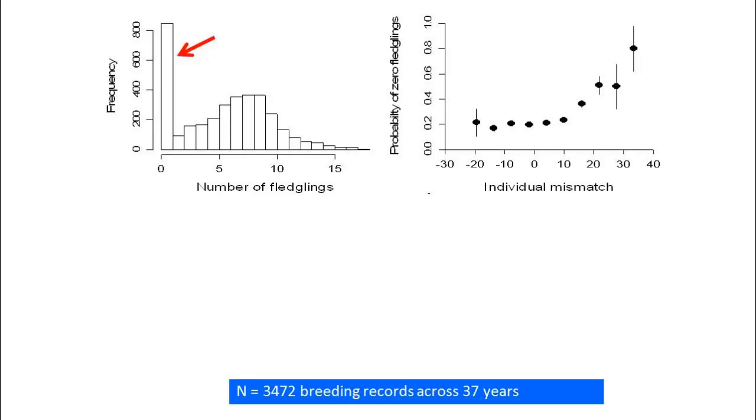We found that the probability of producing zero fledglings shows a strong quadratic relationship with individual mismatch. X-axis values greater than zero indicate late breeding relative to the food peak while values less than zero indicate early breeding. Thus females breeding late relative to the food peak were more likely to fledge zero offspring compared to females who were better matched with the food peak.